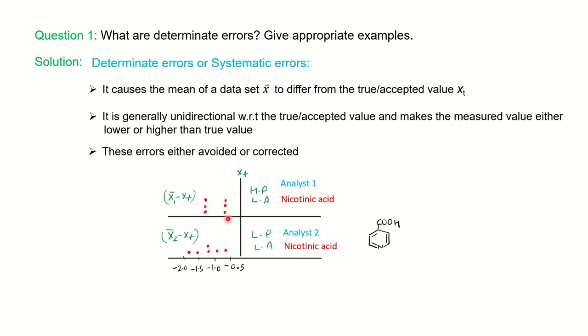When you get this type of data you can notice here the first analyst is showing high HP and LA. What is HP? High precision. And LA is low accuracy. We have already uploaded a video on precision and accuracy. If you haven't seen you can watch that video. I will share the link in the description box. As per the definition, high precision means if you have the closeness of the results.